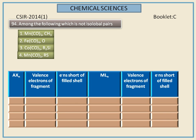First, we calculate valence electrons for methyl and pentacarbonyl manganese. The number of valence electrons for the methyl fragment is 7, and for pentacarbonyl manganese it is 17. In both cases, it requires only one electron to get the stable configuration.